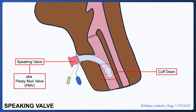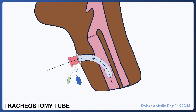Above the tracheostomy tube we have the larynx, the middle part of which is the glottis or vocal cords. The speaking valve is a one-way valve that allows air in during inspiration, but does not allow air to come out of the tracheostomy tube during expiration. As the cuff should be down, it means that during expiration the air passes around the cuff and through the glottis, thereby allowing speech to be generated.